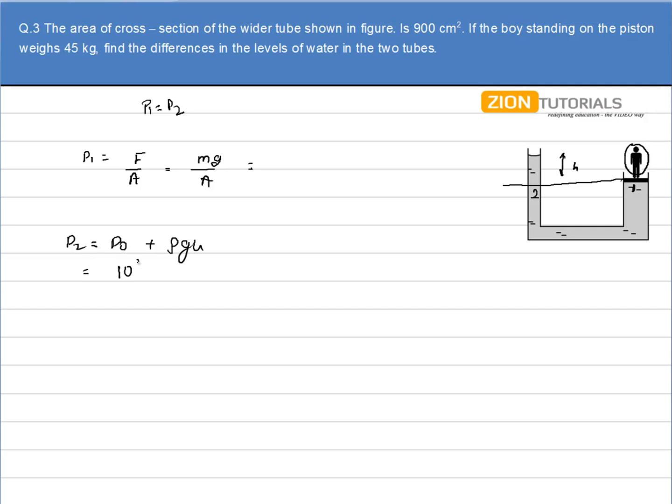I can write P0, that is 10 to the power 5, plus ρ, that is the water, 1000 into 9.8 into H. That is the value of P2, and P2 is equal to P1, and P1 is equal to mg by A. So I substitute the value of mg by A: the mass is 45 into 9.8 divided by area, that is 900 into 10 to the power minus 4.